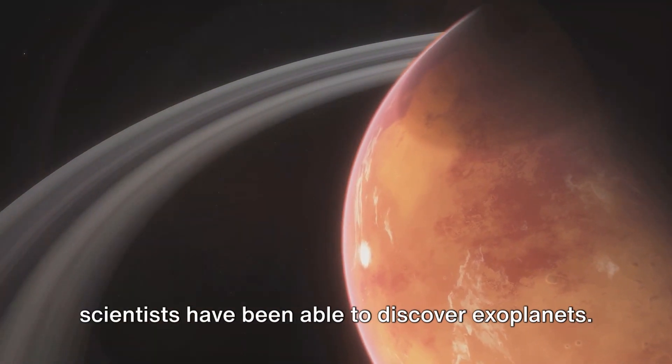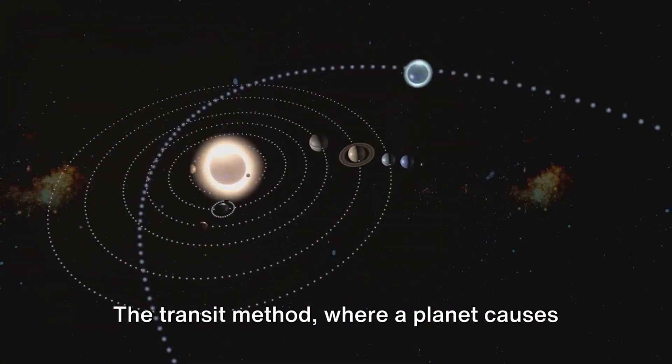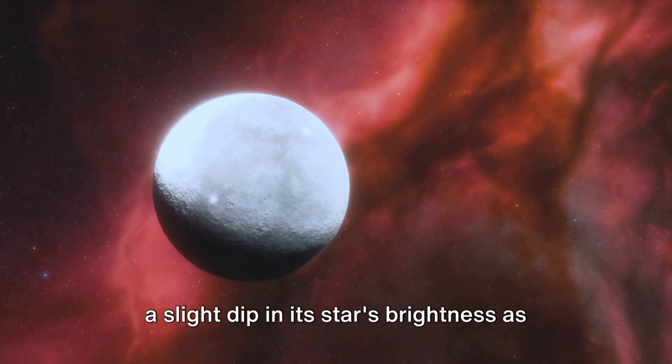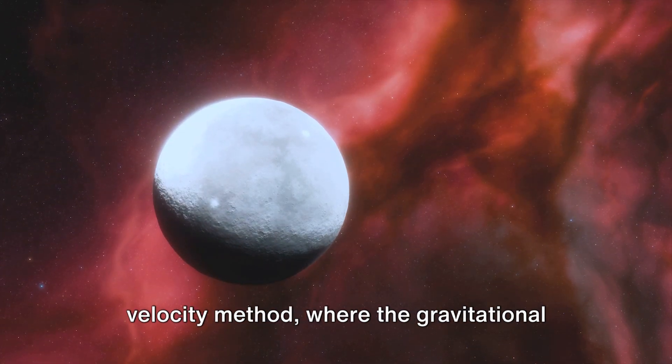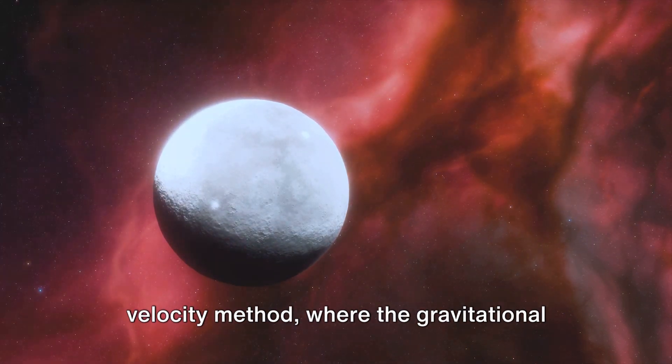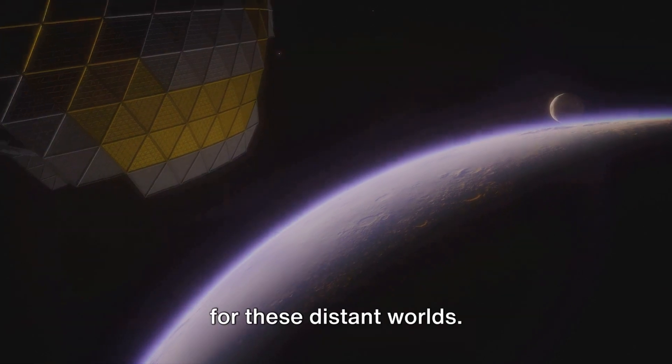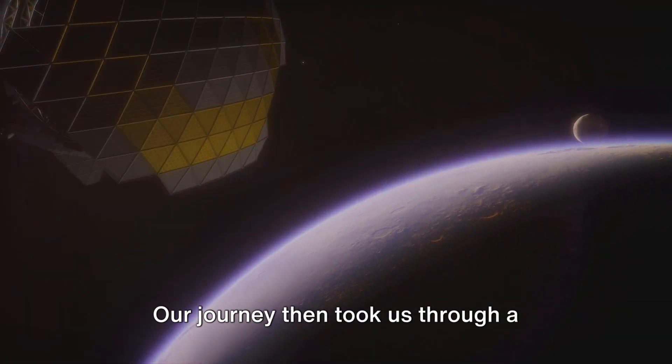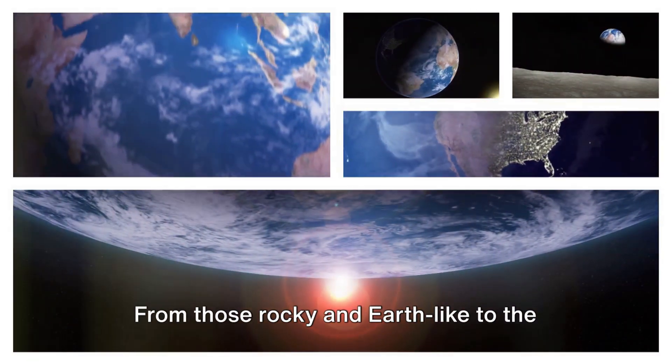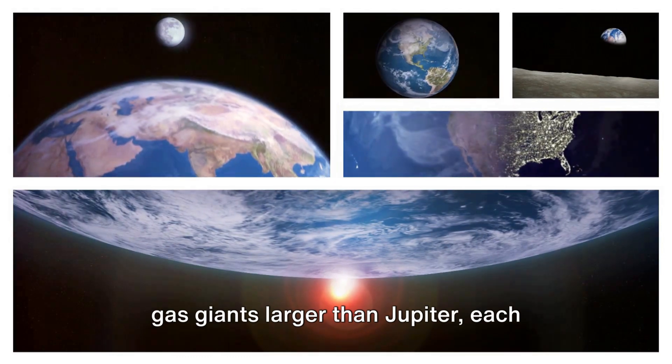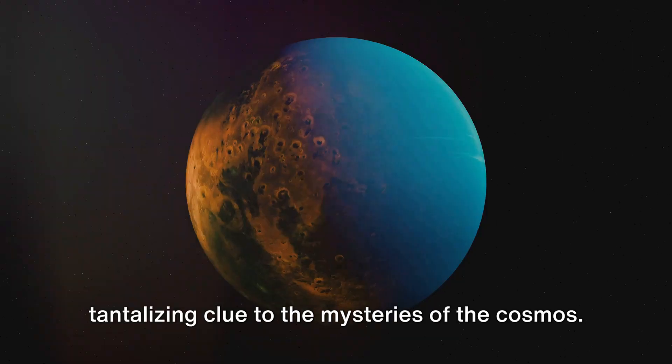The transit method, where a planet causes a slight dip in its star's brightness as it passes in front of it, and the radial velocity method, where the gravitational tug of a planet causes its star to wobble, have both been instrumental in our hunt for these distant worlds. Our journey then took us through a fascinating catalogue of exoplanets. From those rocky and Earth-like, to the gas giants larger than Jupiter, each exoplanet carries a unique story, a tantalizing clue to the mysteries of the cosmos.